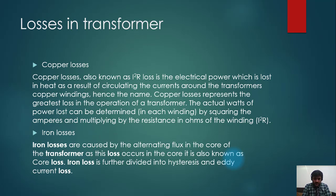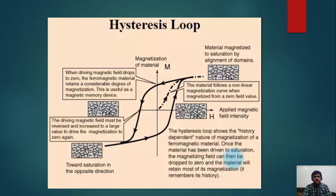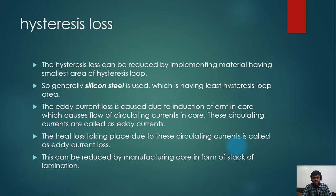Iron losses are caused by alternating flux in the core of the transformer. Since this loss occurs in the core, it is known as core loss. Iron loss is further divided into hysteresis loss and eddy current loss. The loss occurring in the winding — which is made of copper — is called copper loss. The loss occurring in the core is called core loss or iron loss.